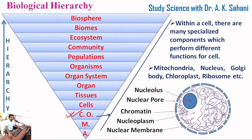The third level is cellular organization. Within a cell there are many specialized components which perform different functions for the cell — mitochondria, nucleus, Golgi body, chloroplast, ribosome, etc., as you see in the picture.